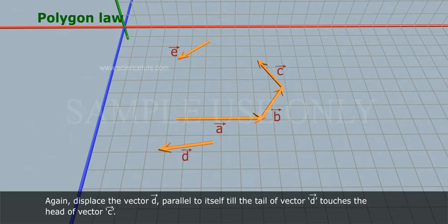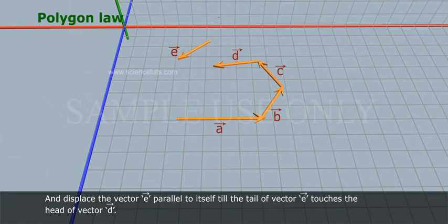Again, displace the vector D parallel to itself till the tail of vector D touches the head of vector C. And displace the vector E parallel to itself till the tail of vector E touches the head of vector D.